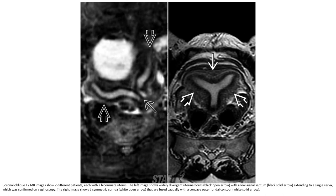T2 MRI showed two different patients each with bicornuate uterus. The left image shows widely divergent uterine horns with a low-signal septum extending to a single cervix, confirmed on vaginal surgery. The right image shows two symmetric cornua with a concave outer fundal contour.